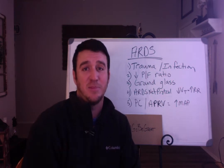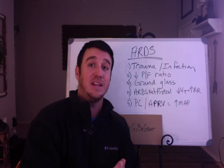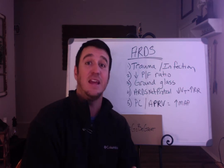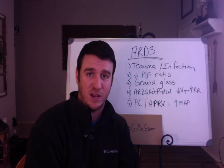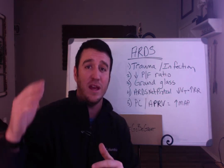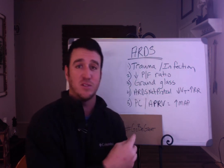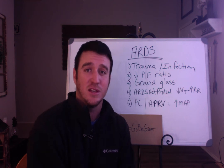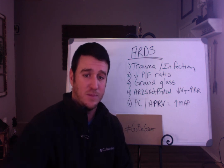So to summarize: ARDS typically follows trauma or acute infection, indicated early on by a dropping PF ratio, and definitively by ground glass appearance on your chest x-ray. Think about decreasing your tidal volume and increasing your rate, or changing to a pressure mode of ventilation such as pressure control or APRV to increase your mean airway pressure. ARDS in five points — hope you enjoyed it.